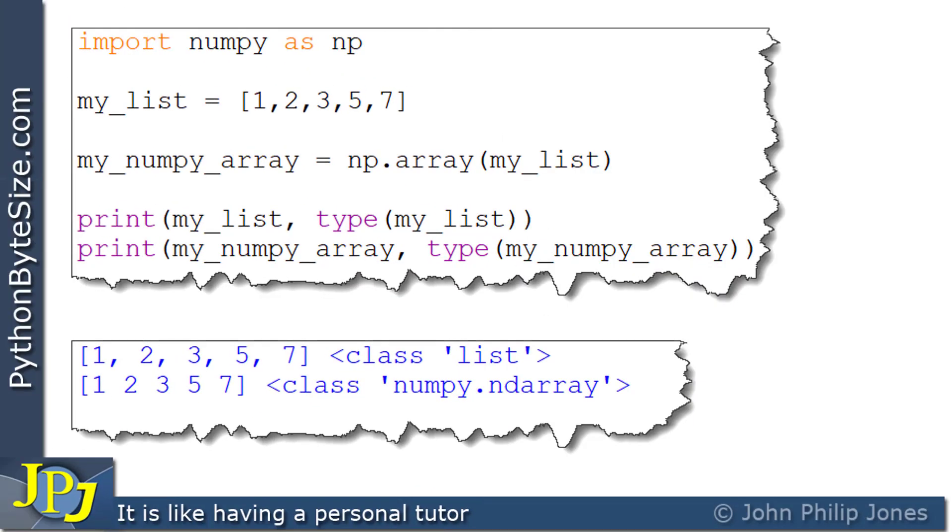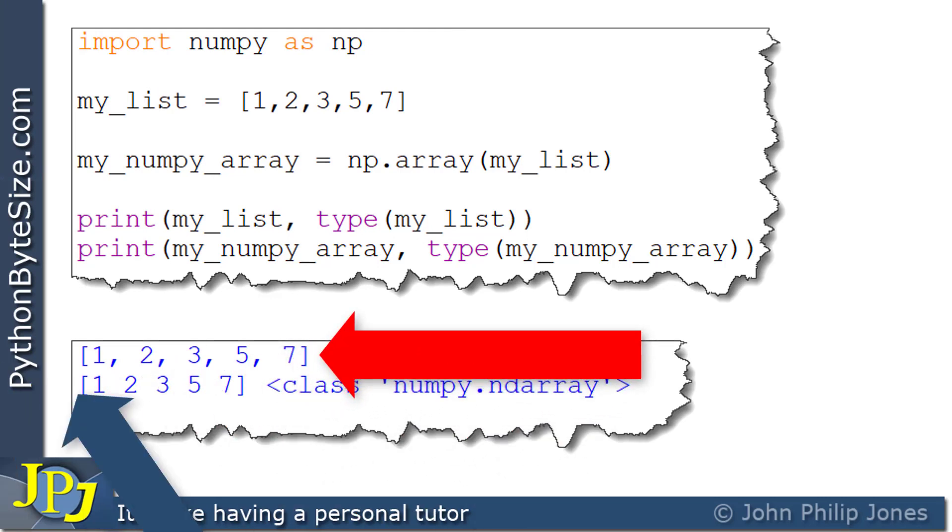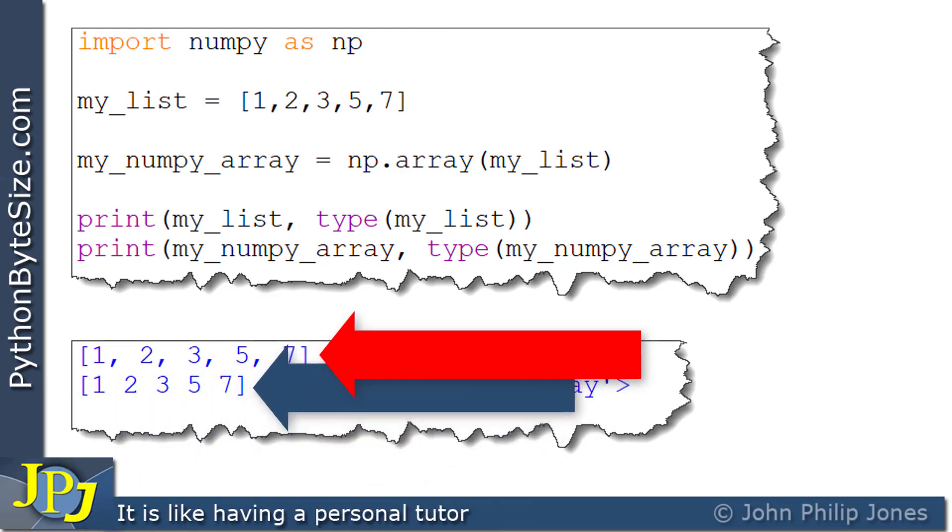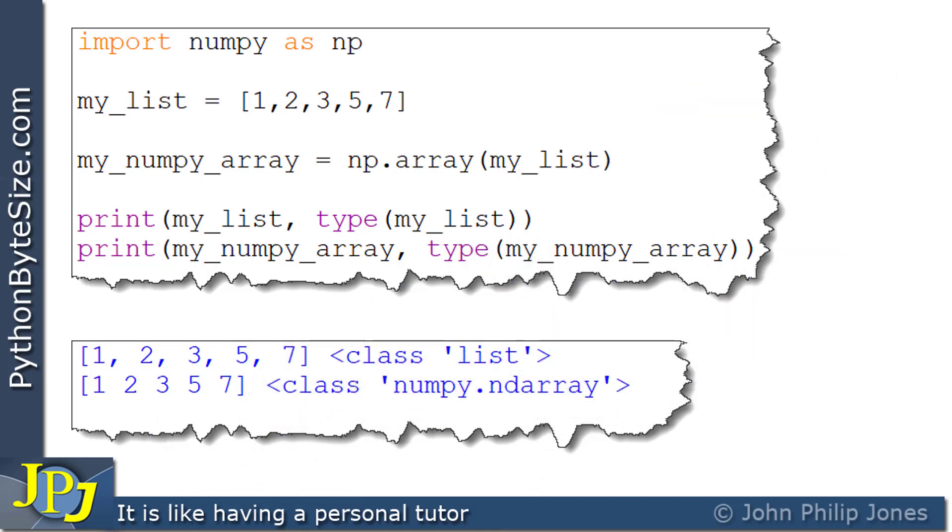So superficially, when you look at the output of the list and of the numpy array, they appear to have the same content. So they look like they're one and the same, but they are not. You have to realize that this is based on the list class. It's an instance of the list class, whereas this is an instance of this class here. So they are based on entirely different classes.